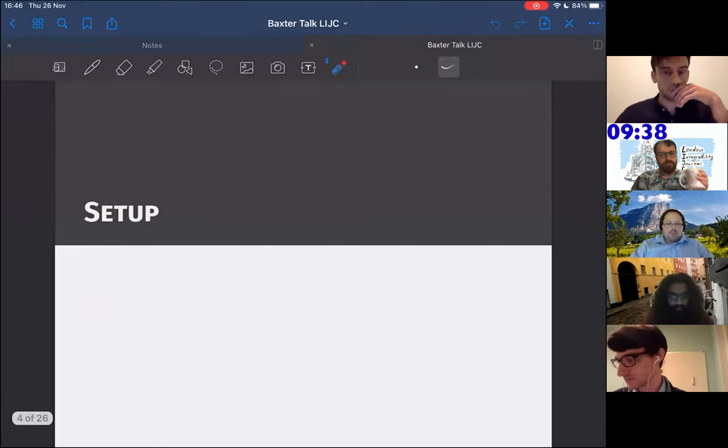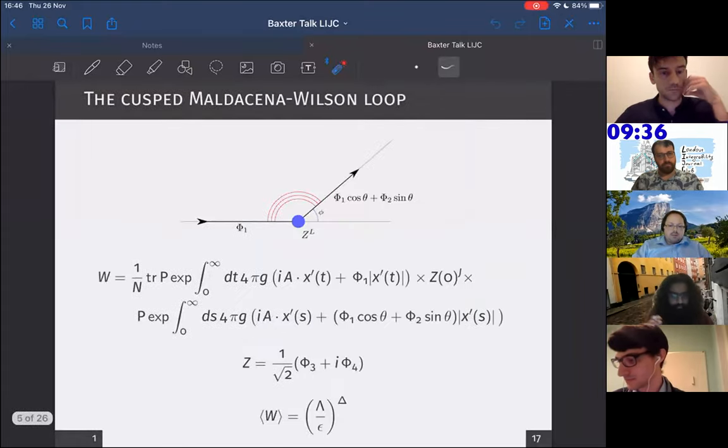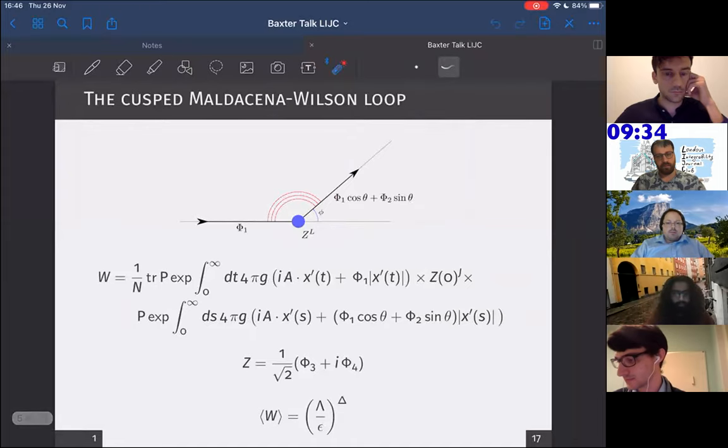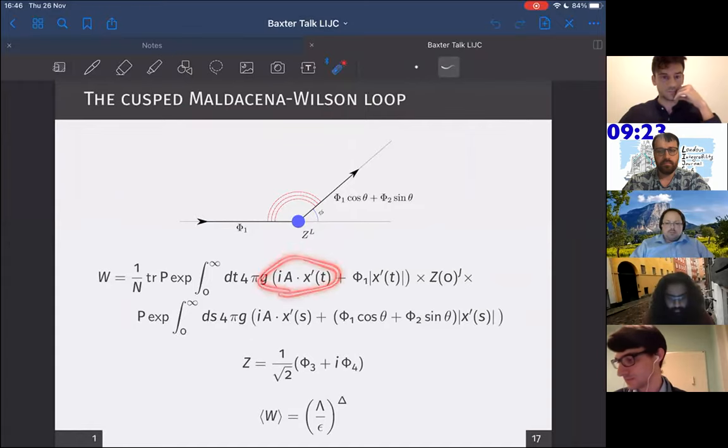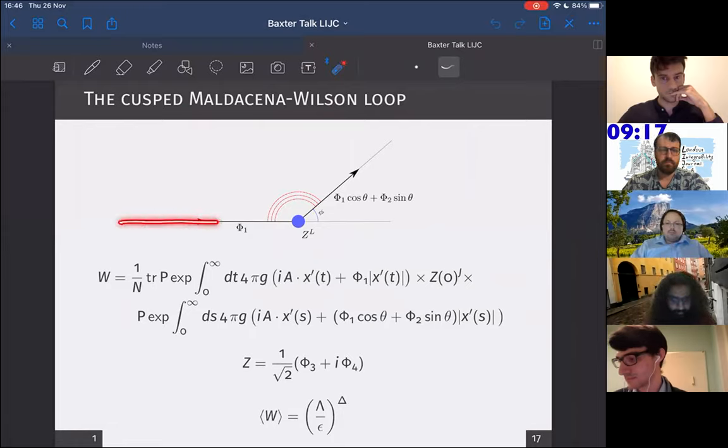Let me get right to it. I will start directly with the setup. The main object of my consideration will be the Maldacena-Wilson loop in N equals four supersymmetric Yang-Mills theory. The Maldacena-Wilson loop is a Wilson loop but you also have an additional coupling to the scalars. As you see in this picture, we have a Maldacena-Wilson line here and we include coupling to the scalar phi-1.